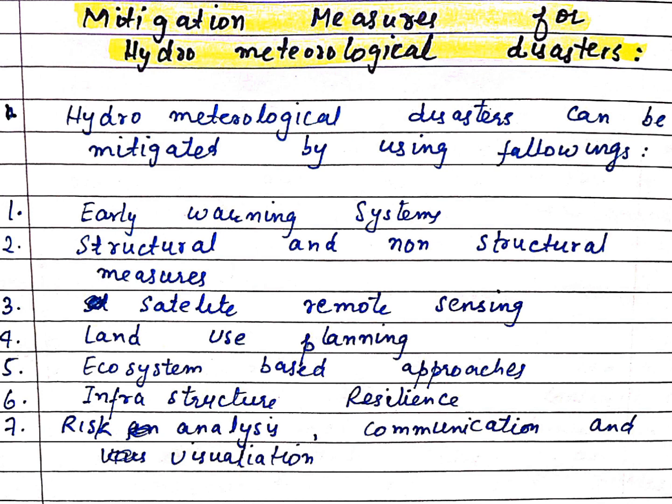We should analyze risk — identify which areas have how much risk and what the chances are of a meteorological disaster occurring. Communication and visualization: we should have very good communication facilities, and we need to visualize which areas have higher threats and which have lower threats, mapping every area accordingly.